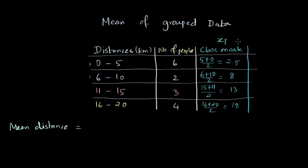Let's represent this as Xi. Usually we keep a bar over it to suggest that it's a mean of the class or a class mark. So this is Xi. Number of people is nothing but the frequency and it's Fi.